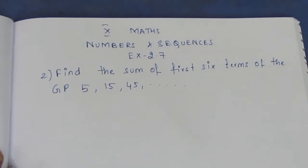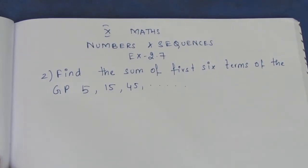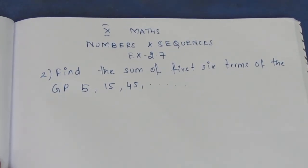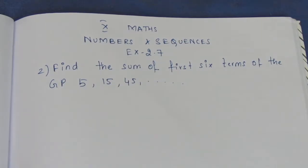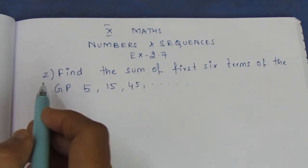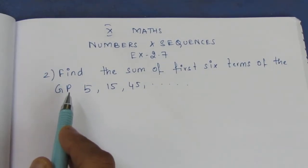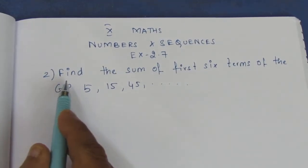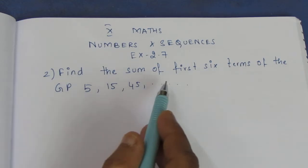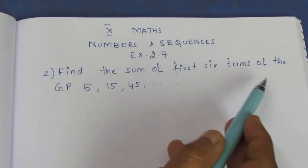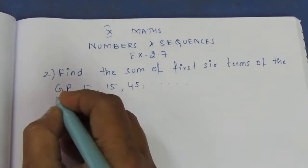Hello viewers, I am Aitli. This is the 10th Max Numbers and Sequences exercise 2.7. Let's see the second sum in the video. Find the sum of the first six terms of the GP.